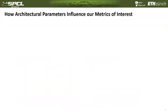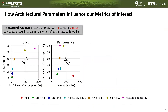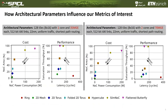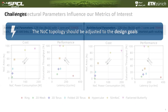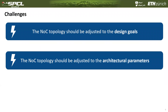Let's also talk about the influence of architectural parameters onto our metrics of interest. Here you see the same picture as shown two slides before, and I would like to put this side by side with an analysis of a second architecture. The only difference is that the architecture on the right has two cores instead of one core per tile, and twice the tile area compared to the architecture on the left. As you can see, the cost-performance trade-off that a similar topology achieves heavily depends on the architecture. For example, the hypercube — the orange square — achieves about 60% throughput in the left architecture, while on the right architecture it only achieves about 30% throughput. So here we see a second challenge: the network on chip topology should be adjusted to the architectural parameters as well.